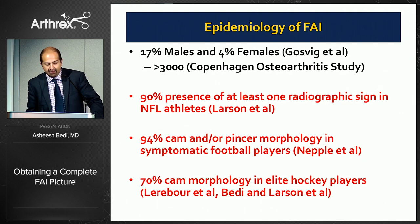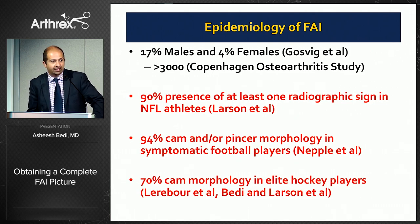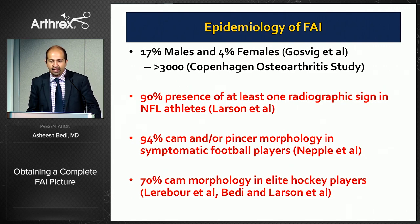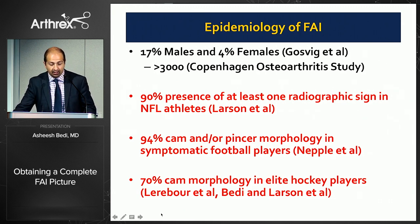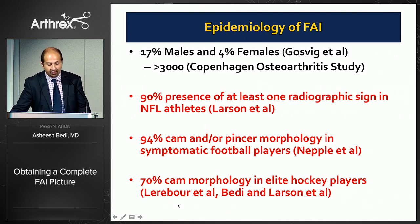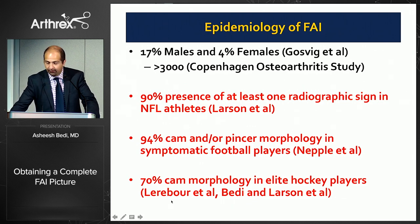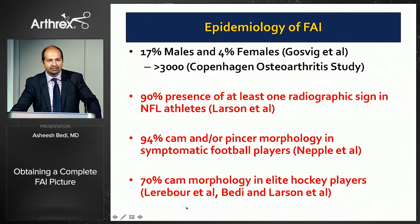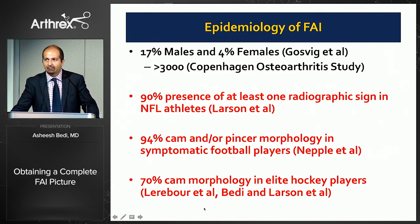In terms of the epidemiology of FAI, the Gosvig study shows about 17% of males and 4% of females have this in the general population. But many of us are also treating the athletic population. Chris Larson published that 90% of NFL athletes had this in combine studies. Jeff Neppel out of Wash U showed about 94% of football players have either a cam or pincer finding. Chris and I published that 70% of elite hockey athletes had this at their preseason physicals on imaging.